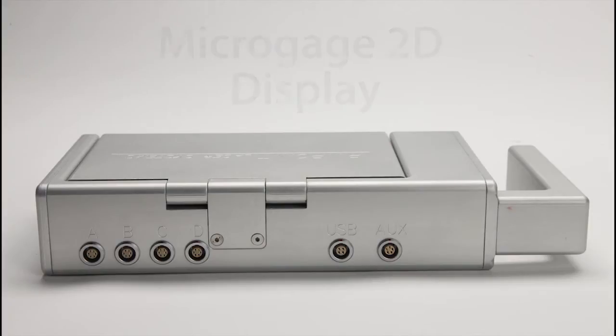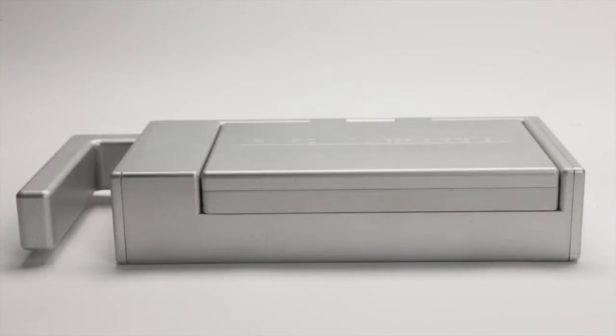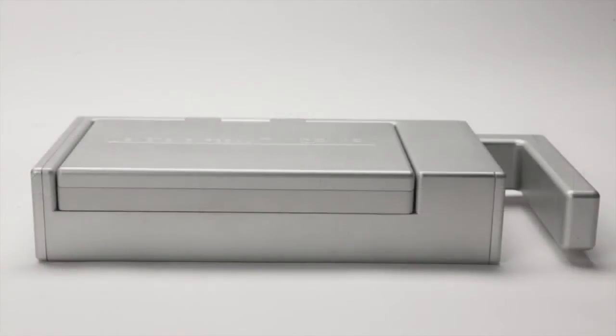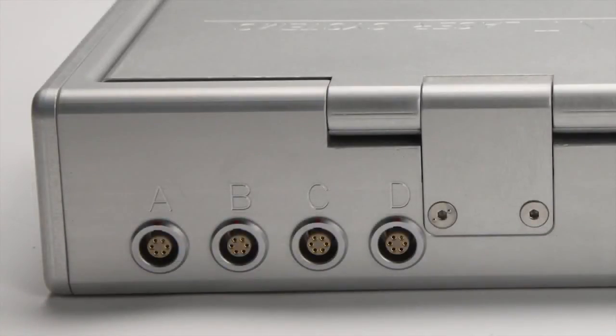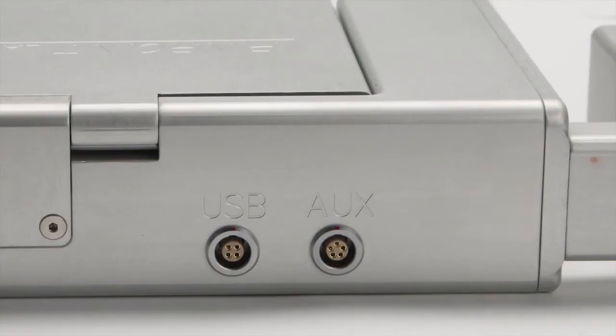The micro gauge 2D display is a portable unit with a handle that can be reversed and used on either side. The back of the display has four connector ports for incoming receivers. Additional connectors on the back of the unit are provided for a USB interface and an auxiliary port for serial and other interface options.